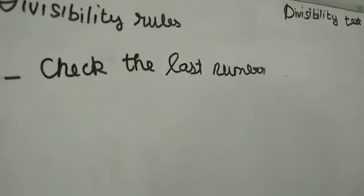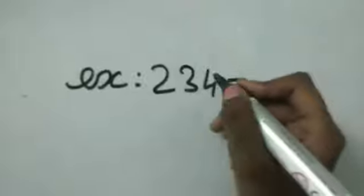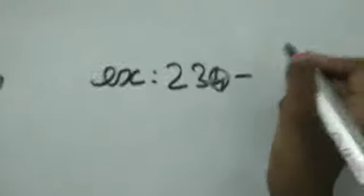For 2, we should check the last number. Example: if they gave 234, 4 is coming in 2 table or not. It is coming, so it is divisible.